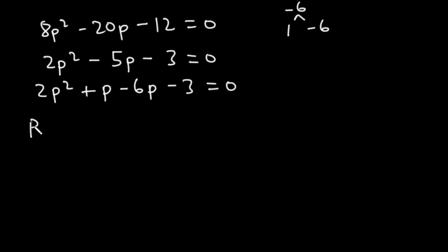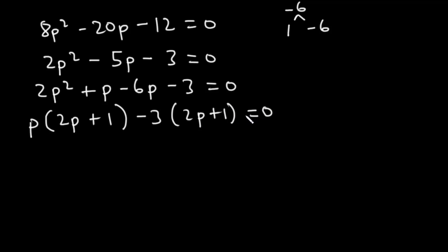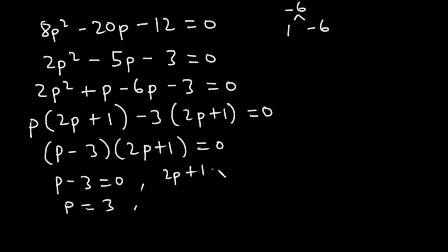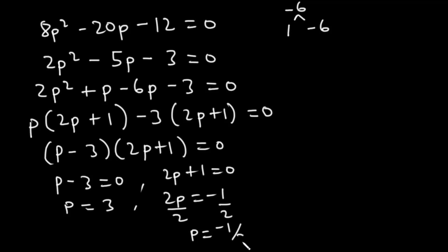We factor out p from the first two terms to get p(2p+1), and factor -3 from the last two terms to get -3(2p+1), giving (p-3)(2p+1) = 0. So either p - 3 = 0, meaning p = 3, or 2p + 1 = 0, meaning p = -1/2.